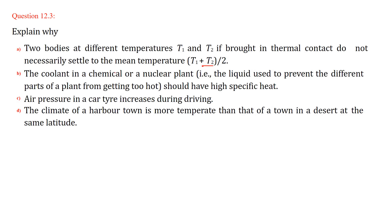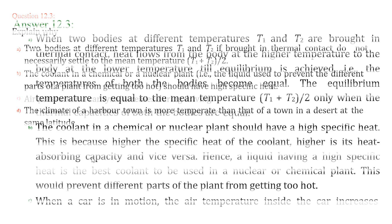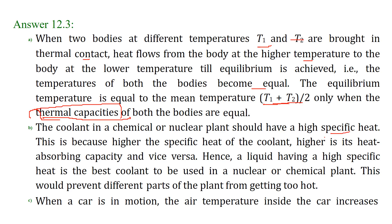A coolant in chemical or nuclear plants should have high specific heat. A coolant is the liquid used to prevent different parts of a plant from getting too hot. The higher the specific heat of the coolant, the higher its heat-absorbing capacity, which is exactly why it is used. A liquid with high specific heat is best for use as a coolant in nuclear, chemical, or any other plant.